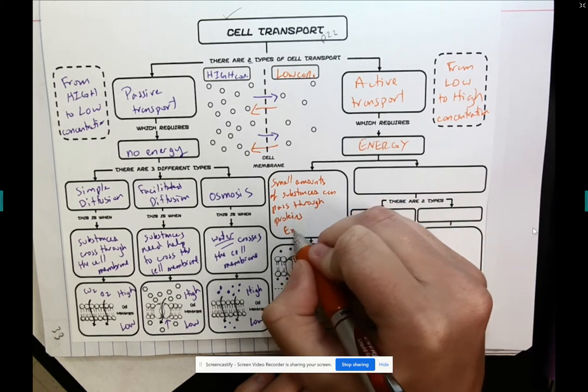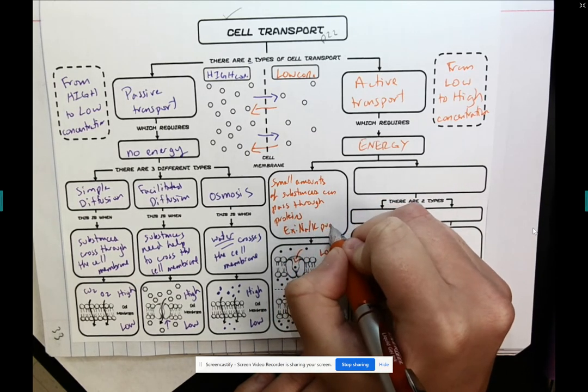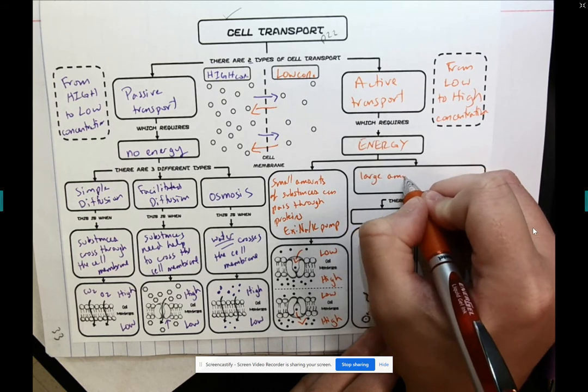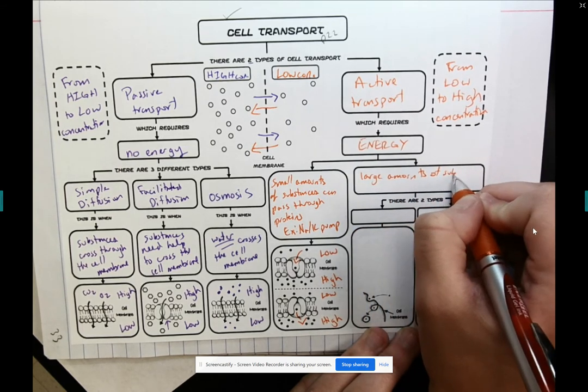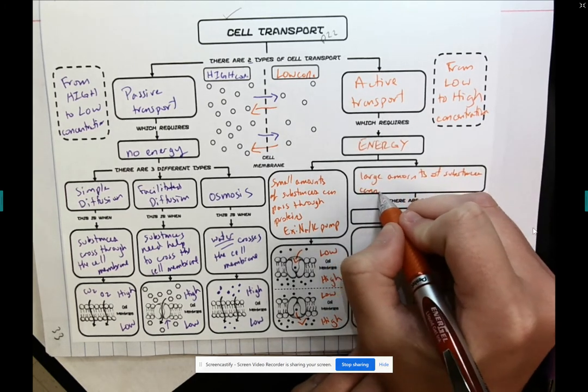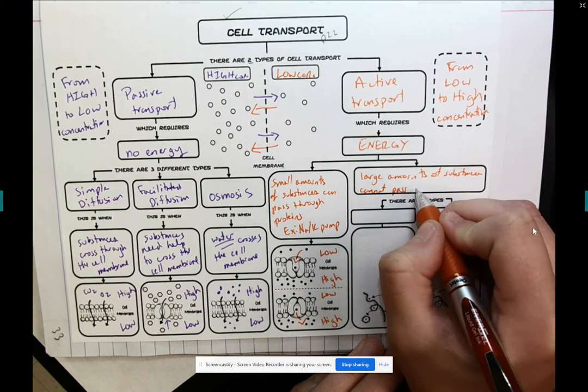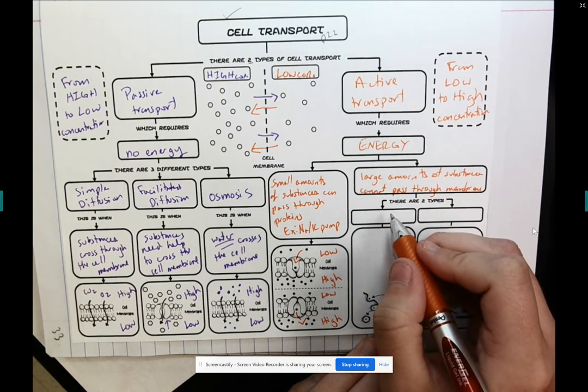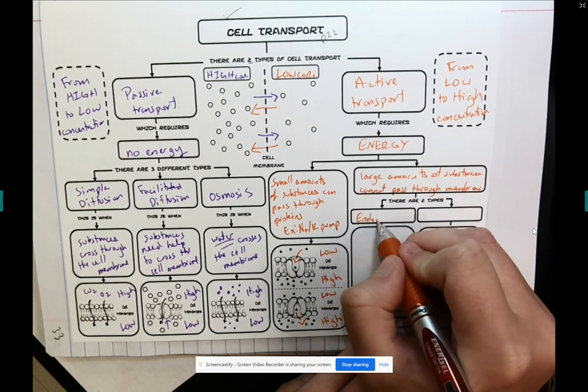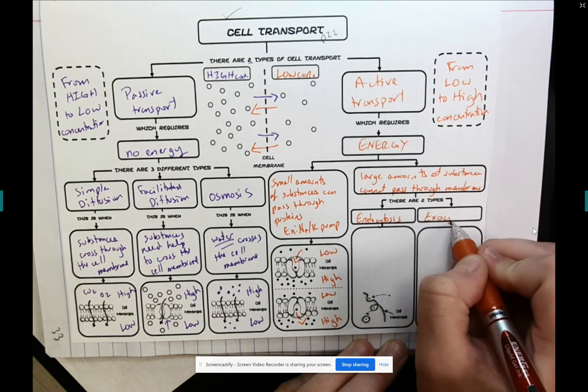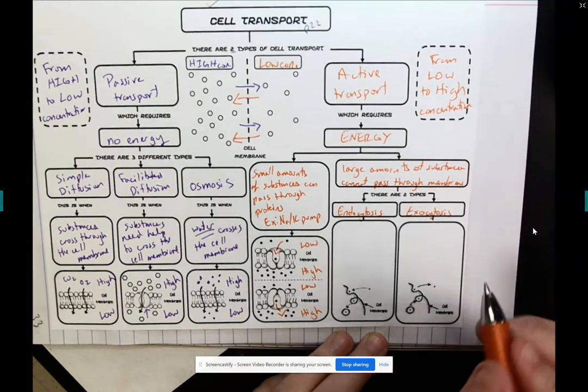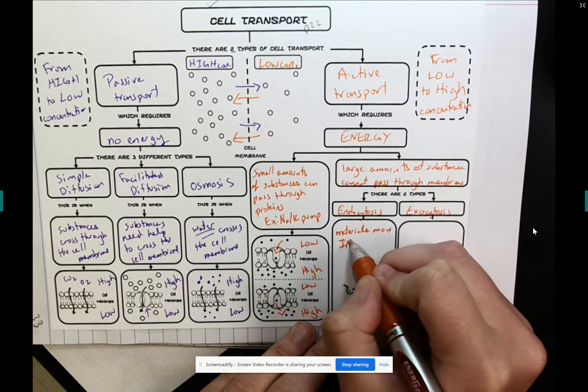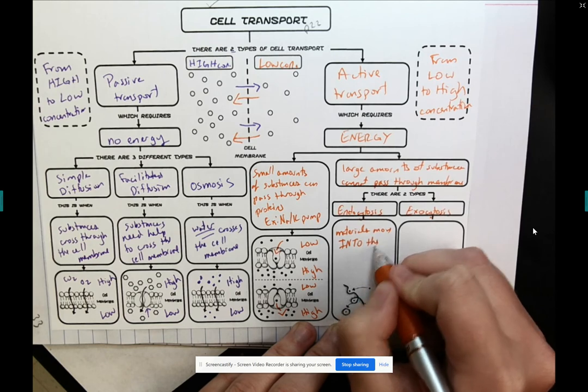And remember, an example would be the sodium-potassium pump. Another example is when we have large amounts of substances that cannot pass straight through the membrane. In this example, we have to use either endocytosis or exocytosis. With endocytosis, materials move into the cell.